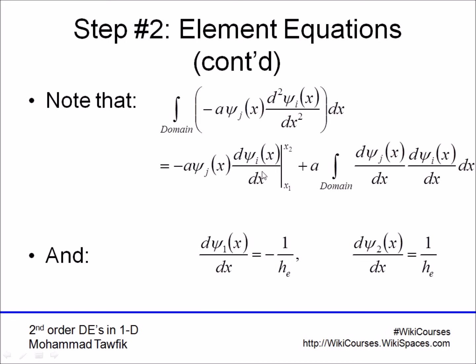However, this boundary term, remember that psi j is equal to 0 on one side and 1 on the other side, and we also have assumed that we may have the values of d psi by dx at different points. So, this is easily substituted. However, let's just ignore it for a few slides and see how it will come back to appear in our equations.